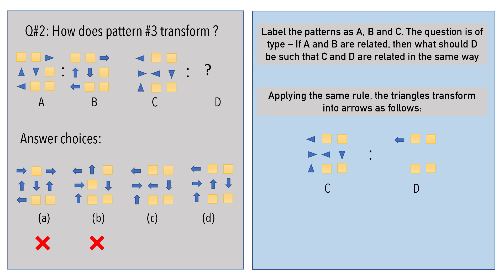Let us take pattern C and create pattern D by hand. First, put the four squares at the same locations as they are in pattern C. Then, start replacing every triangle with an arrow sign that points in the same direction as the triangle's tallest side does.